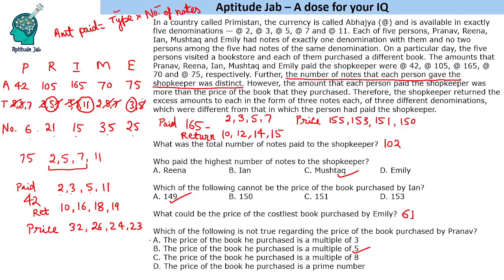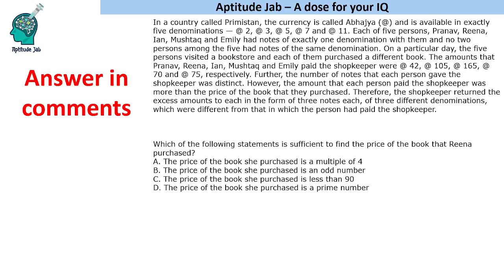This is how we attempt these questions. Now I have a question for you to answer in the comments: which of the following statements is sufficient to find the price of the book that Reena purchased? We already know the data for Reena, so find out what the possible prices of her book are — there will be 4 possibilities. Based on given statements, determine which is sufficient to answer the question. Please answer in the comments. I hope you enjoyed solving this set — please do like the video!